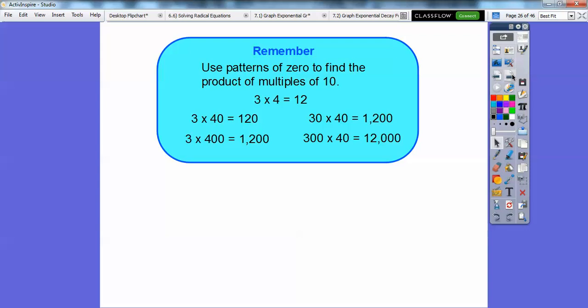Remember, use patterns of zero to find products of multiples of 10. So let's quickly do an example. 3 times 4, that's basic. Everybody knows that's equal to 12. So 3 times 40 is going to be a 12 with this 1 zero. So 12 with a 0 is 120. 3 times 400 is going to be 12 with 2 zeros. So here's my 12 with 2 zeros, so 1,200.